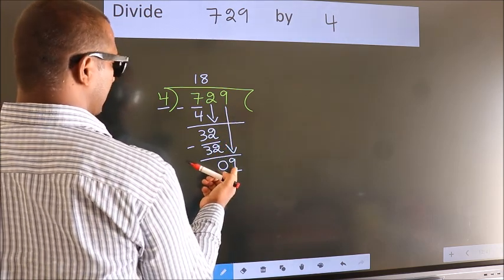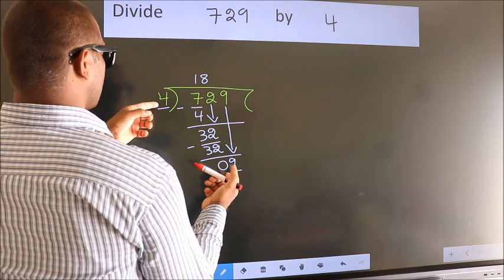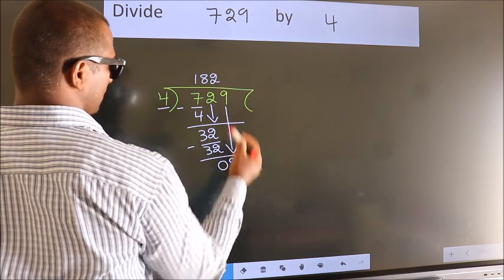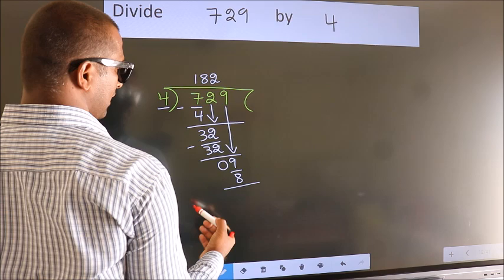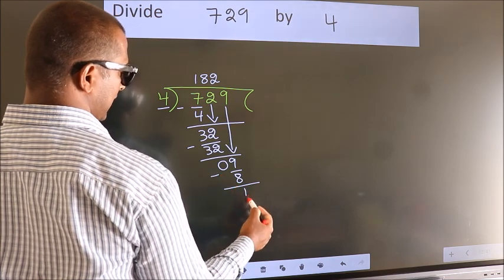A number close to 9 in 4 table is 4 twos, 8. Now we subtract. We get 1.